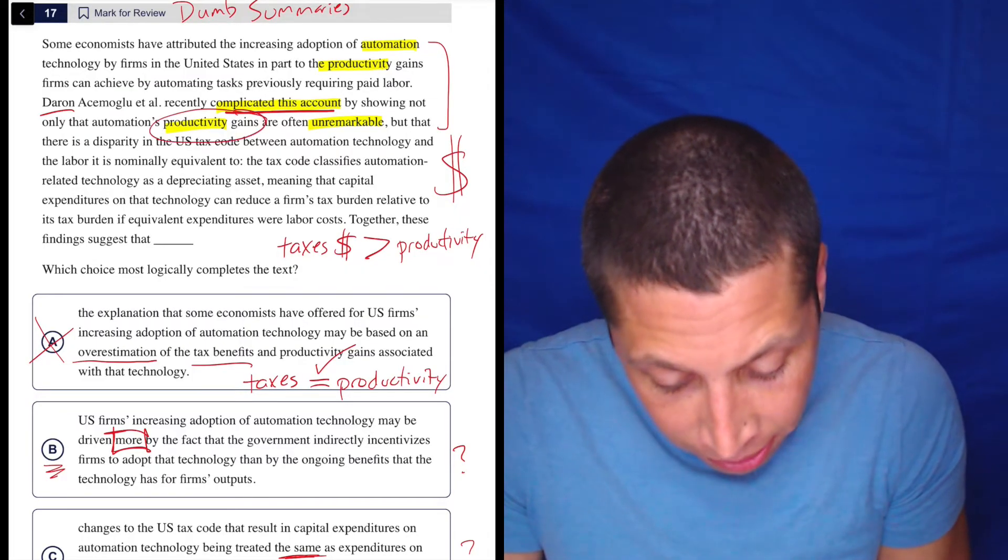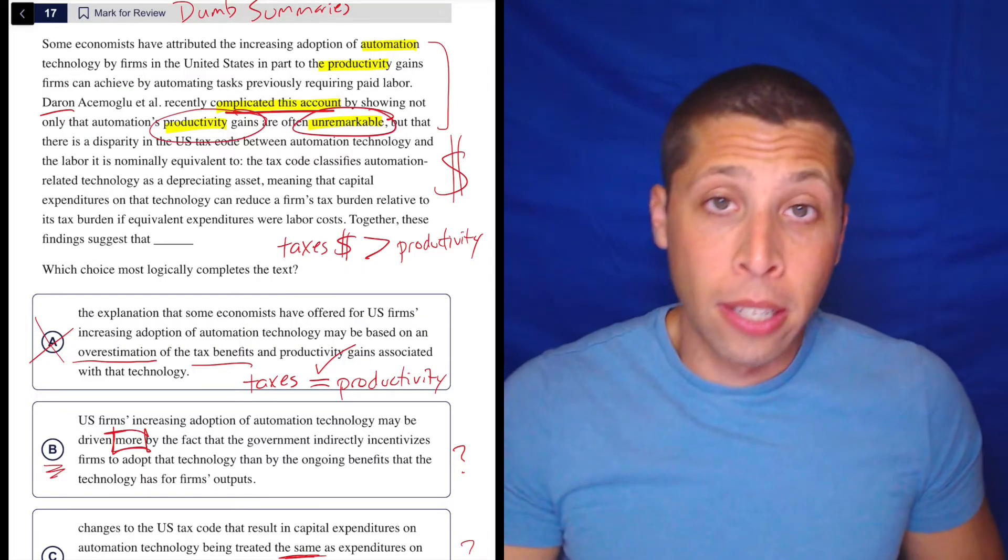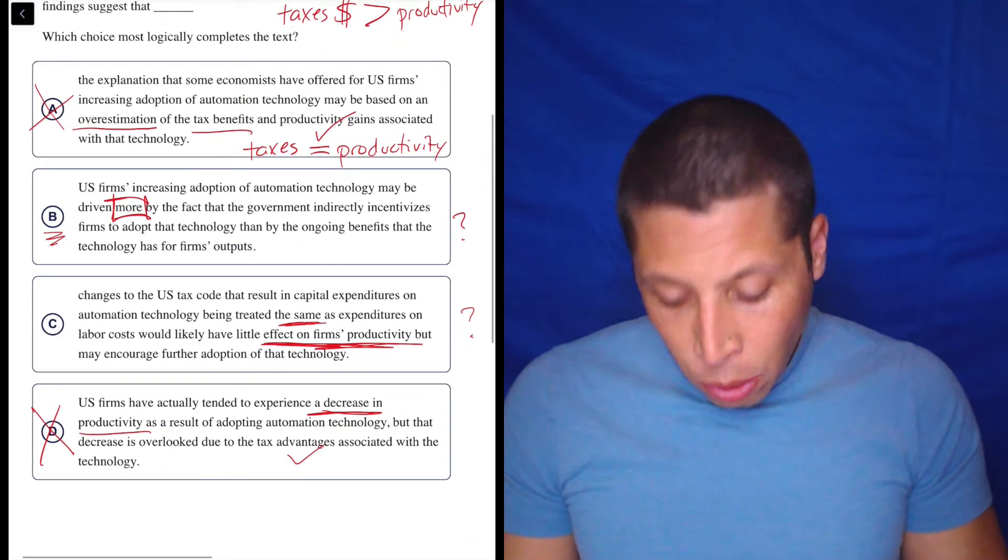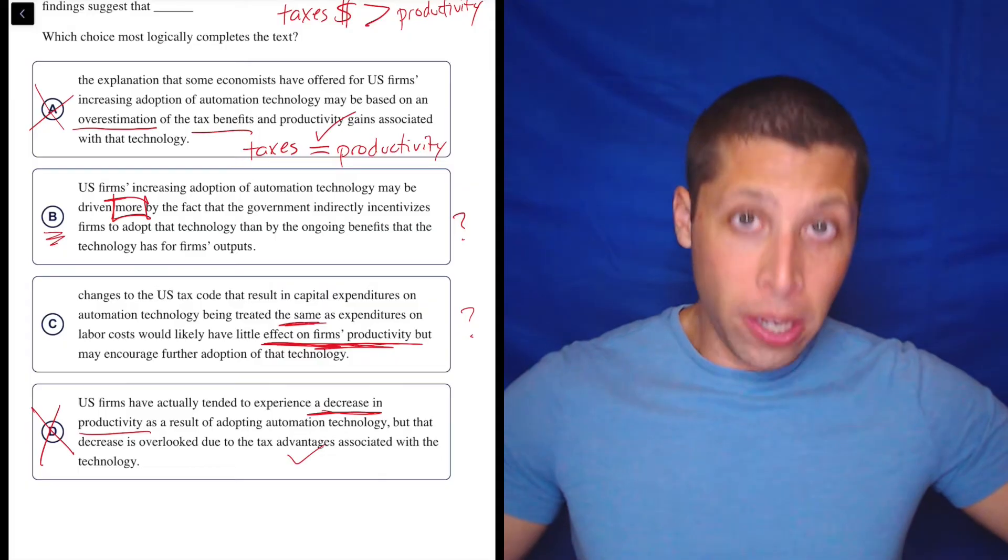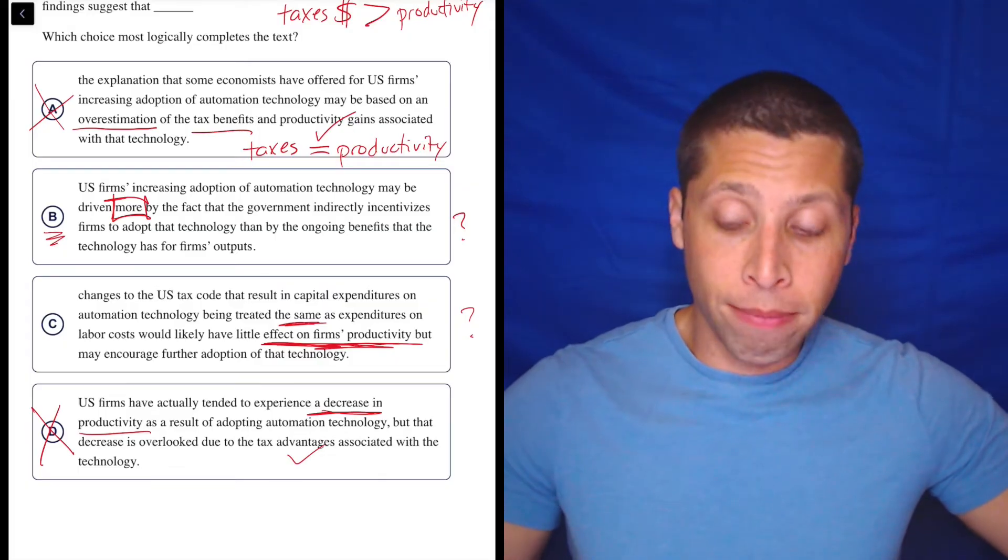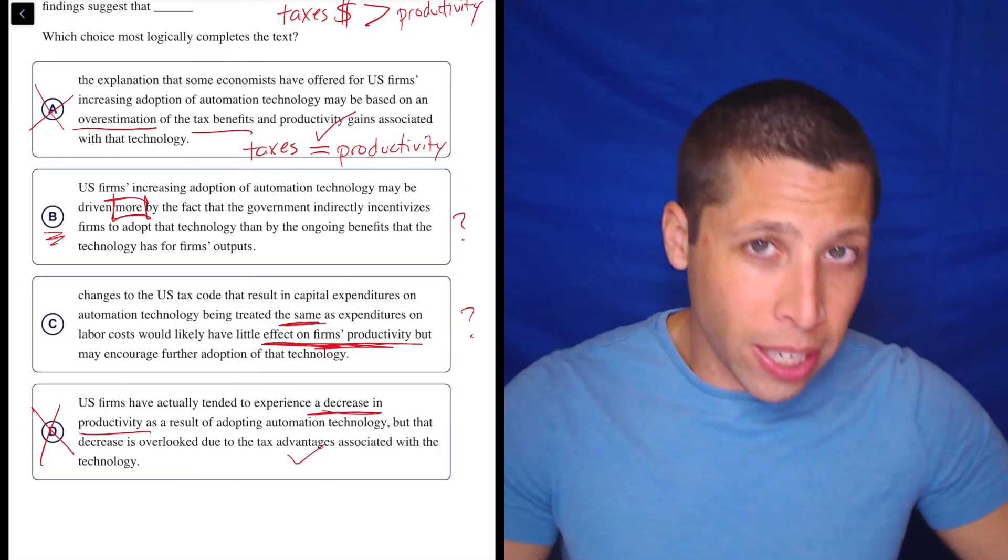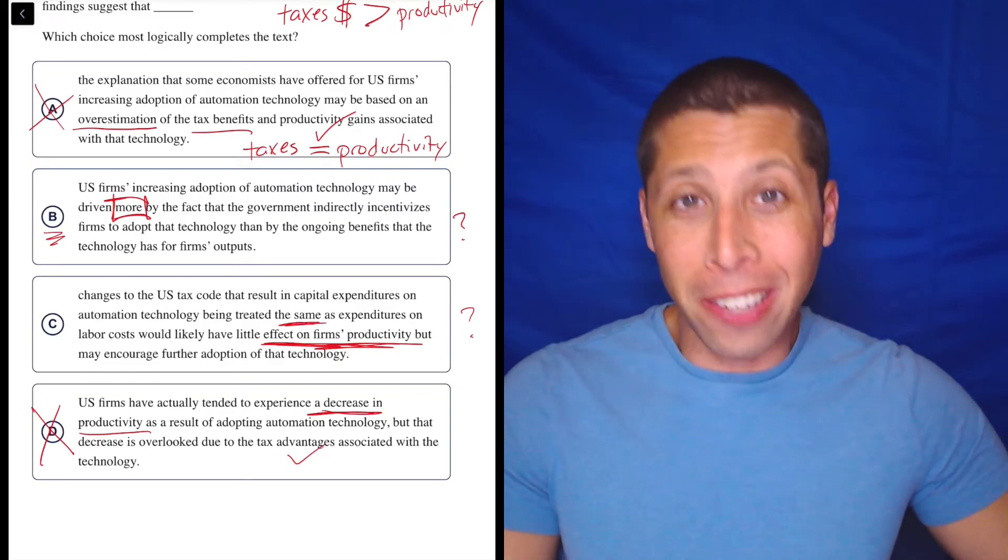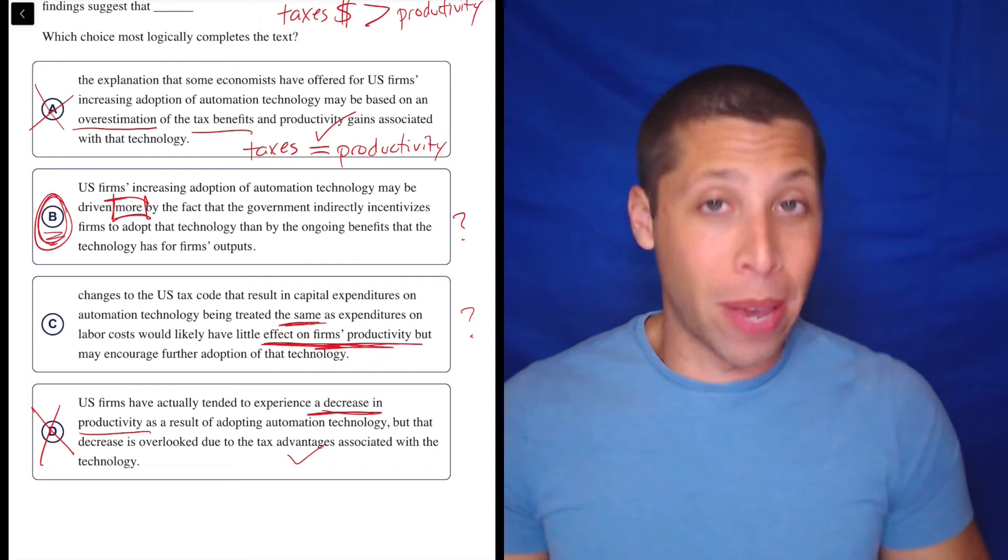So, yeah, the gains are unremarkable. So that's not the same as saying it goes down. So I think a pretty good job on this question requiring not too much understanding of what's going on should get you down to B and C. And I'm hoping that you're feeling a little bit better about B and you pick it.